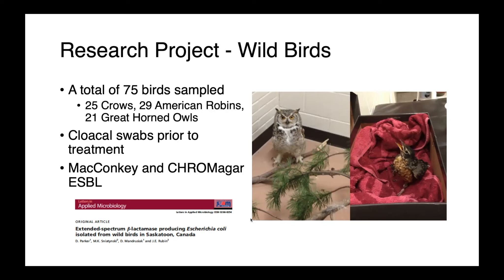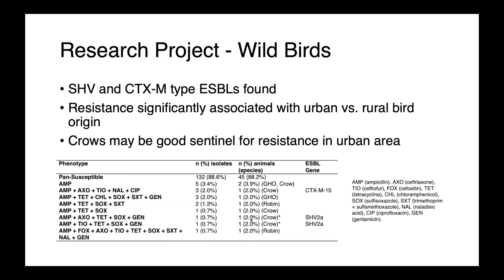We collected cloacal swabs from these animals prior to any treatment. Those swabs were plated on MacConkey agar and chromagar ESBL for the selective isolation of E. coli and ESBL producers. From these birds, we found both SHV and CTXM-type ESBLs. What was really interesting is that there was a significant association between the presence of resistant E. coli and birds that came from the city as opposed to those from a rural origin, perhaps indicating that these animals are picking up resistant organisms from the human environment.